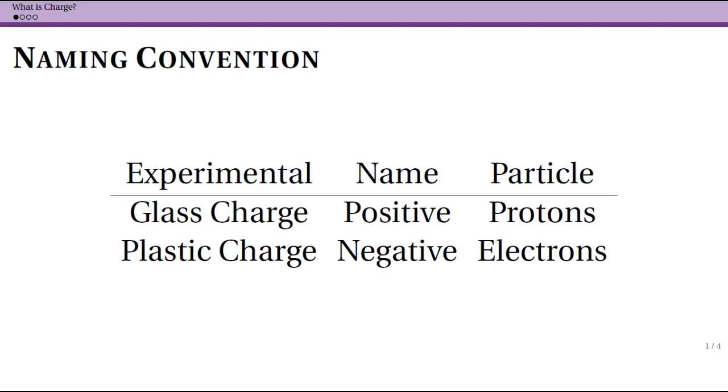We are now going to explore what charge actually is based upon those experiments that we've done and what scientists have figured out in the century since then. In our first experimental model, we said that there was glass charge and plastic charge. This had to do with rubbing either a glass rod with silk or a plastic rod with wool. Now what we're going to call glass charge is actually positive charge, and plastic charge is negative charge. These are just a naming convention. There's no reason why they can't be switched other than the fact that we've been using these names to correspond to glass and plastic since Benjamin Franklin.